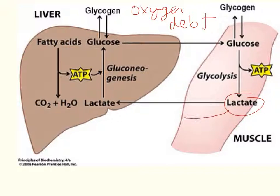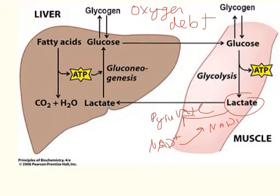You can actually convert lactic acid back into pyruvate, but that requires taking an NAD and converting it into NADH. When there's no oxygen around, you don't want NADH — you want NAD so that you can keep going through glycolysis.